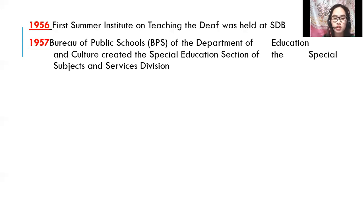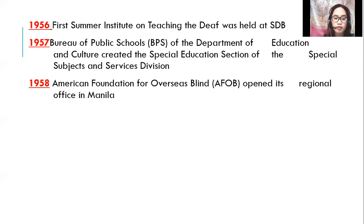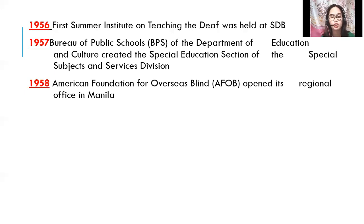In 1958, the American Foundation for Overseas Blind, or AFOB, opened its regional office in Manila. For many years, AFOB assisted the special education program of DECS by providing consultancy services in the teacher training program that focused on the integration of blind children in regular classes and materials production at the Philippine Printing House for the Blind.